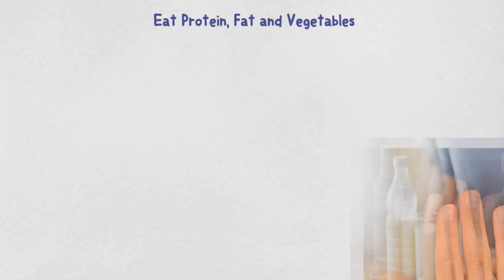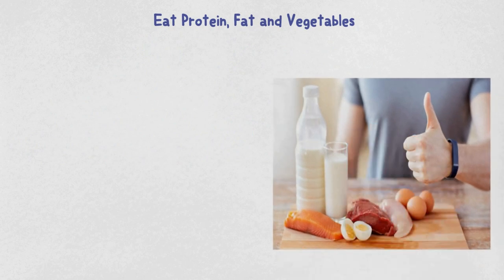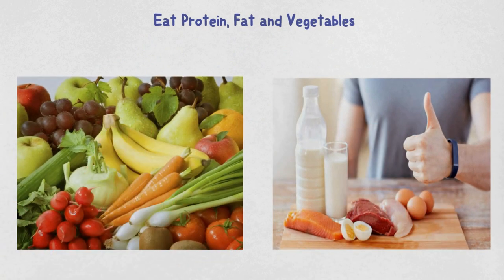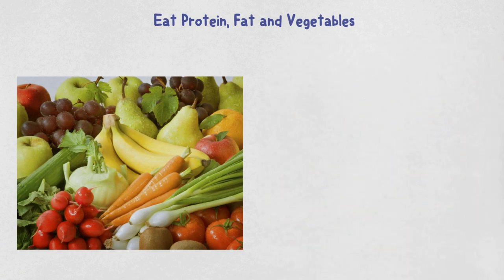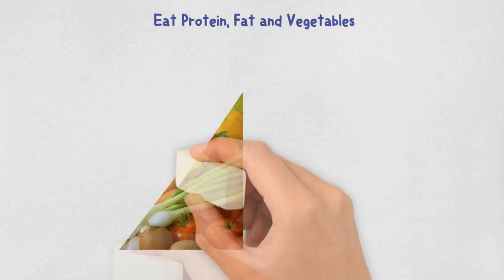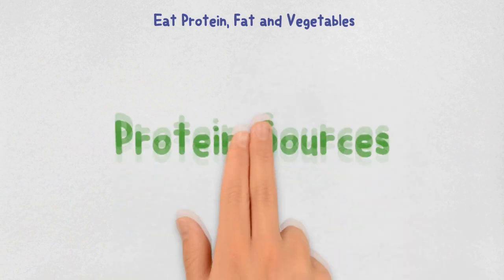Number two, eat protein, fat and vegetables. Each one of your meals should include a protein source, a fat source and low-carb vegetables. Constructing your meals in this way will automatically bring your carb intake into the recommended range of 20 to 50 grams per day.